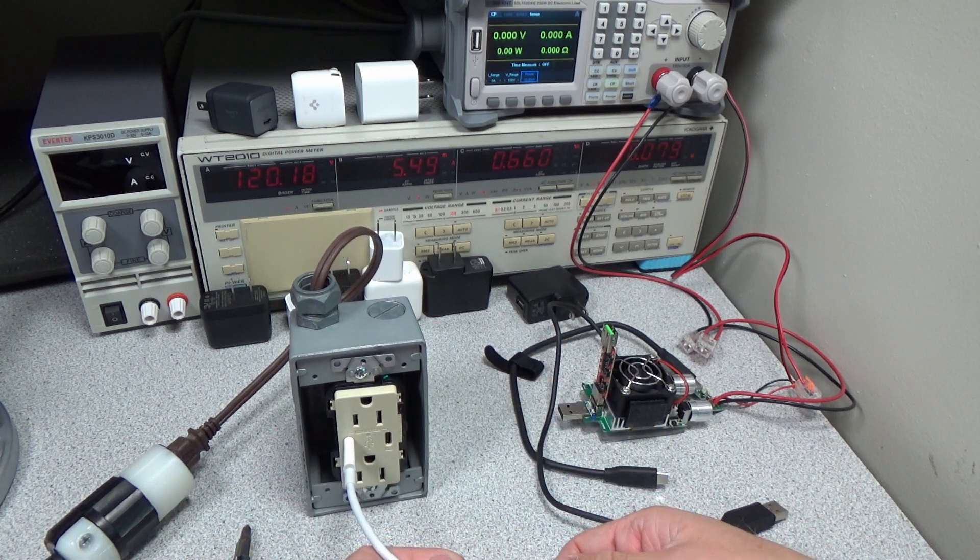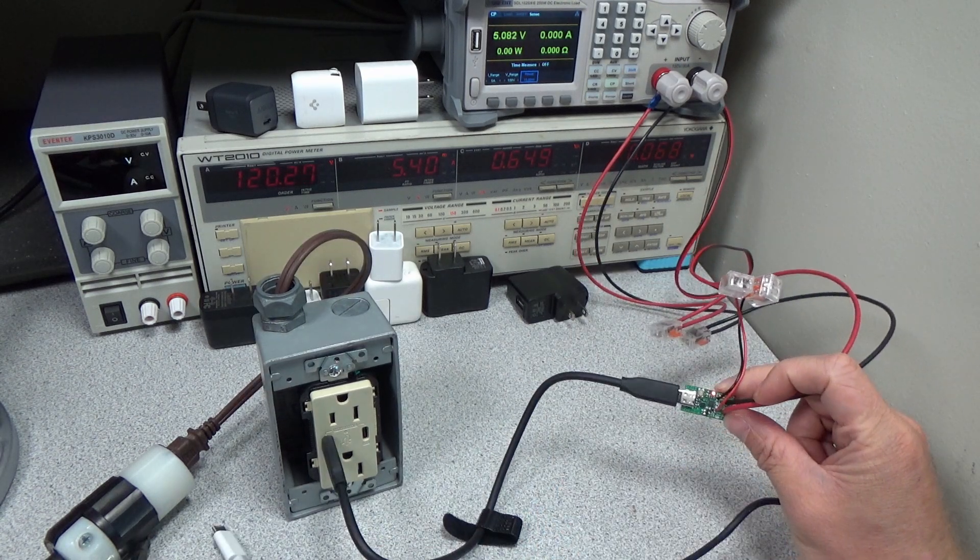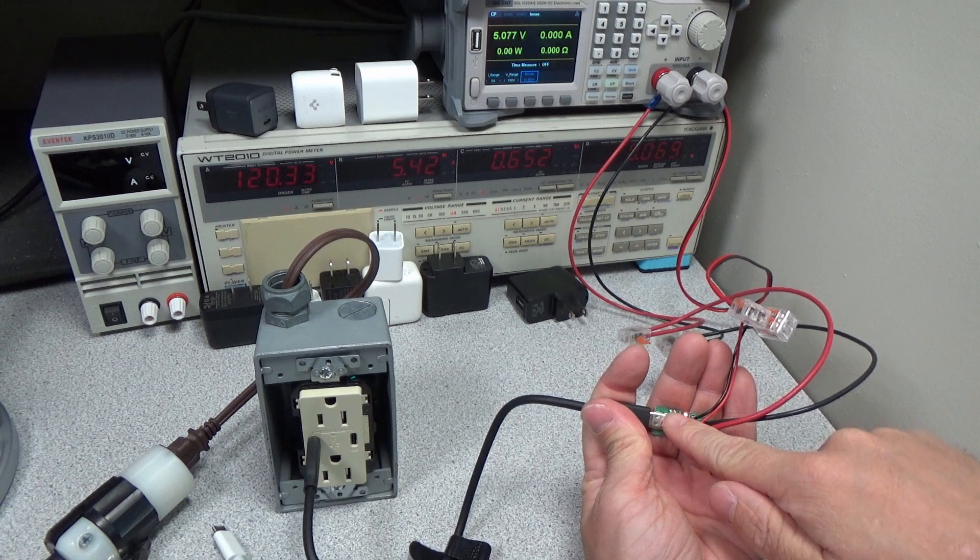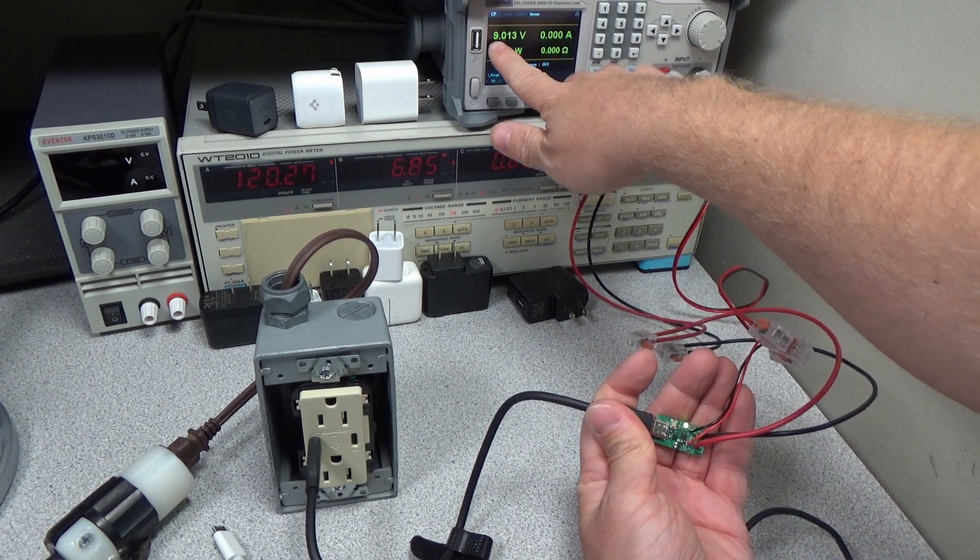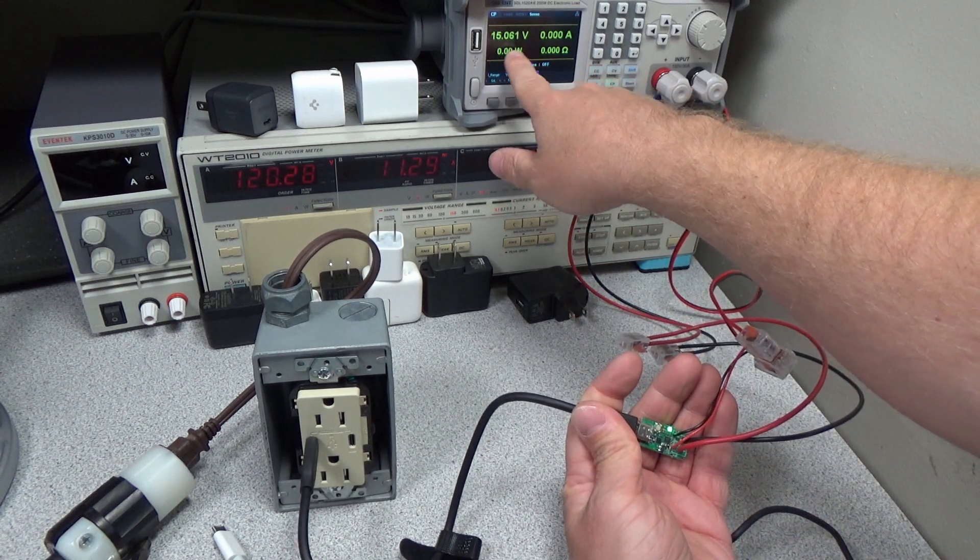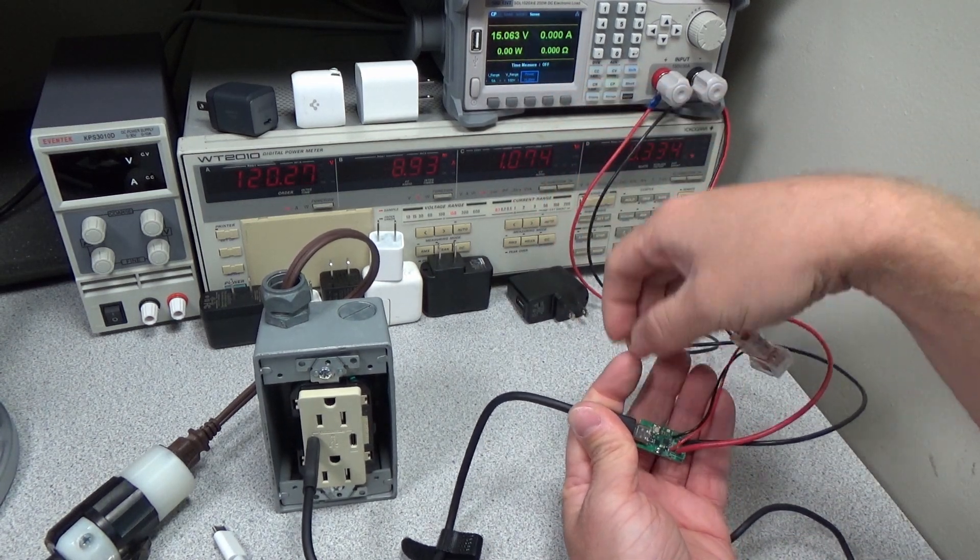All right, let's plug it into the USB decoy and try some different test modes out. So first thing we see is 5 volts. Push the button. Takes it up to 9 volts. Push the button again. You can see we take this up to 15 volts. Push it again. We're back to 5 volts. So this device does operate on the different modes that are specified for power delivery.